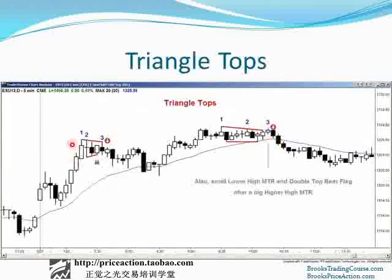Any three push pattern is a triangle. The market went up on bar one, it went down and up on bar two — a second push up — and then a third push up starting with this bar and ending up here. So that's a small triangle and a potential reversal pattern. It had a downside breakout far enough down for at least a scalp.